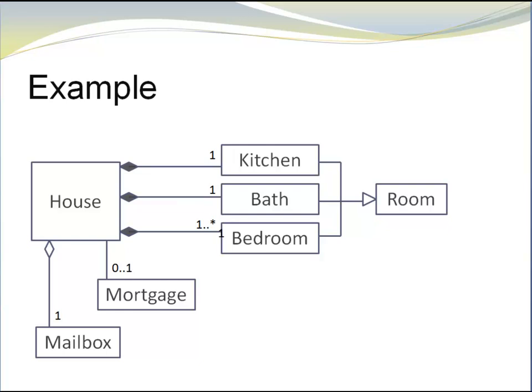Here I have one more example. We have a house. My house has exactly one kitchen, one bath and one or more bedrooms. All three of these, kitchen, bath and bedroom are rooms. Here we have inheritance. Notice the hollow arrowhead. Here we have the black diamonds that indicates this is composition. Kitchen is part of the house. Bath is part of the house. Bedroom is part of the house. Kitchen, bath and bedroom can only exist when the house exists. If we don't have a house anymore, we don't have kitchen, bath or bedroom.